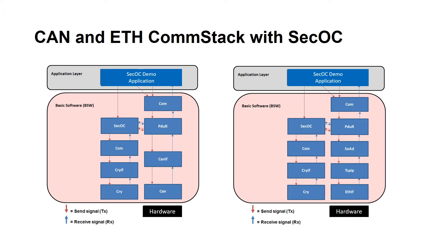The communication stack for CAN and Ethernet with SecOC looks like this. We have a demo application in the application layer and the flow of the outgoing message is via COM to PDUR. PDUR routes the plain message or data, which is called the authentic IPDU, to the SecOC module. The SecOC performs the required MAC operation with the help of the CSM module and sends back the plain text plus freshness value plus the authenticator, which is the message authentication code, to PDUR. This is collectively called Secured IPDU. PDUR then routes the complete Secured IPDU to the lower layers depending on the communication protocol, i.e. CAN or Ethernet.